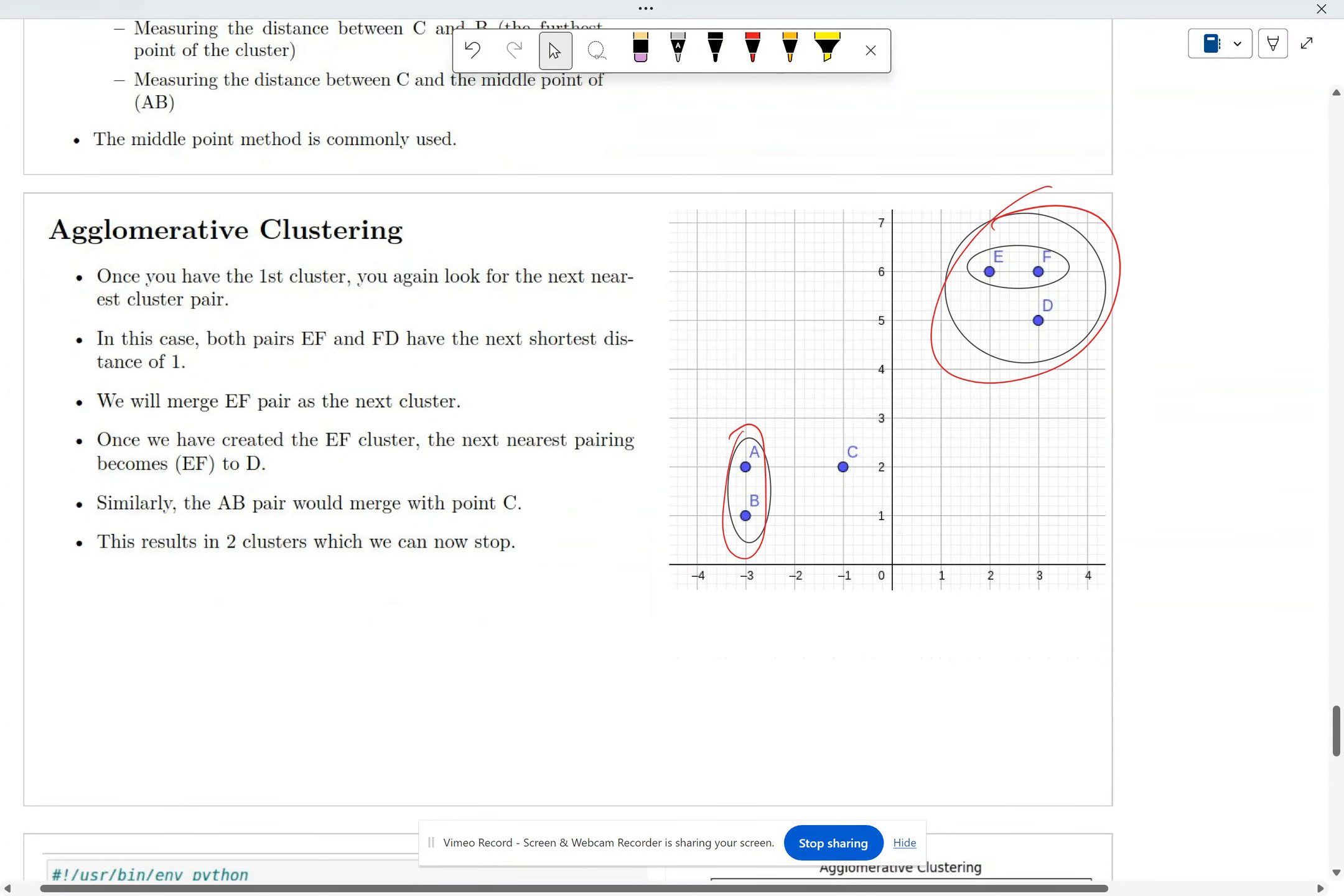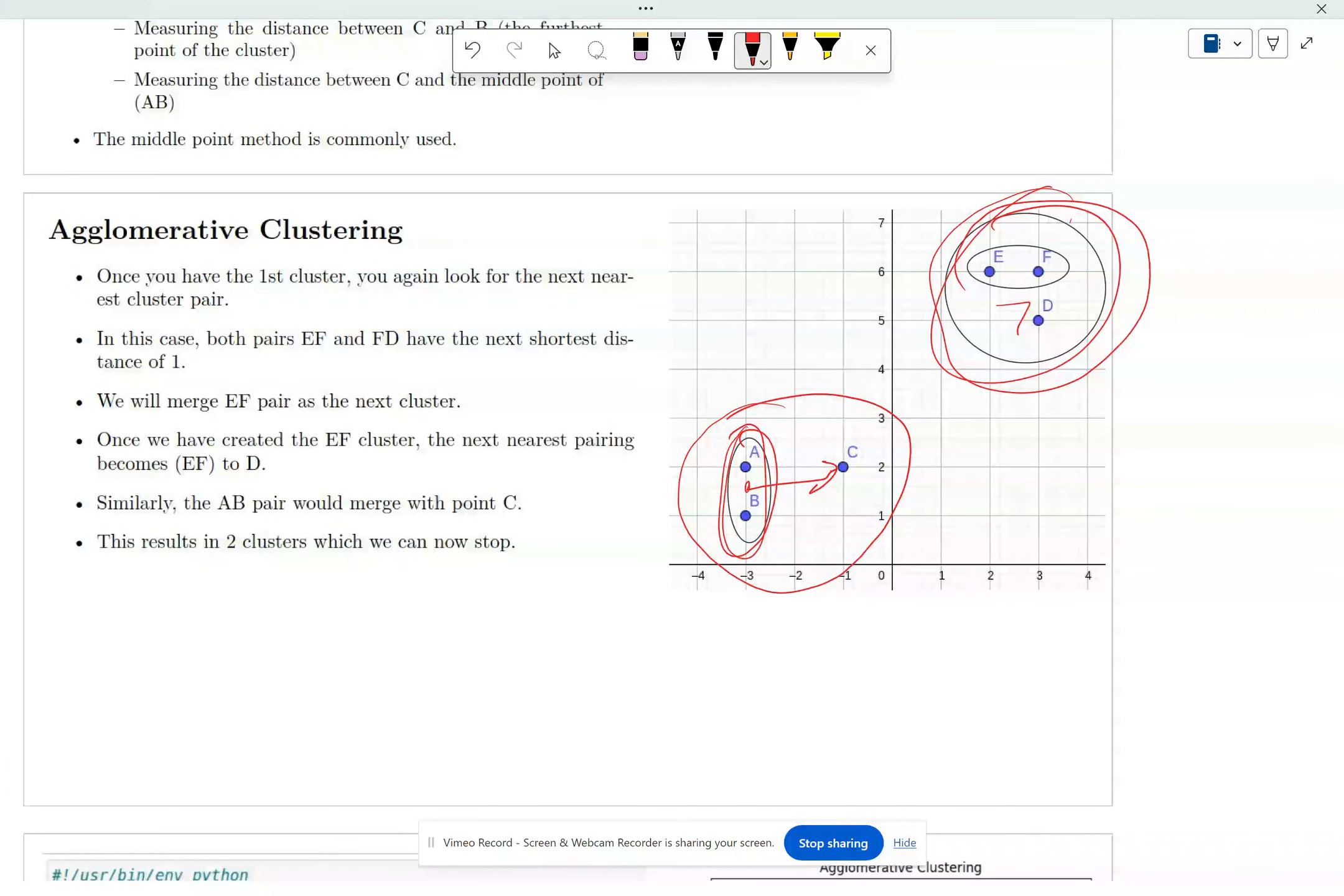And now you're going to see, you're going to do again to find the distance between here and here versus distance here to here. Well, obviously this is shorter. So this is going to be yet another cluster. And once you've reduced down to two clusters, then it's over. That's it.